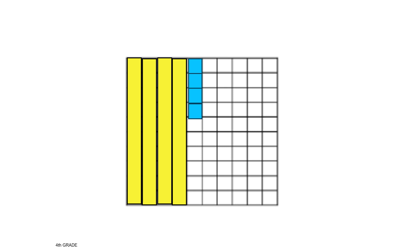Write the decimal and fraction for the amount that is colored. This picture shows 34 hundredths colored. For the fraction, you may have written 3 tenths and 4 hundredths. But because we know that 10 hundredths is equivalent to 1 tenth, we can also call it 34 hundredths.